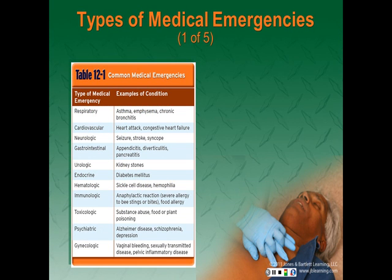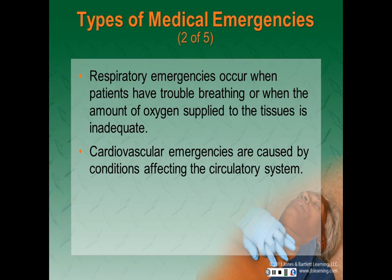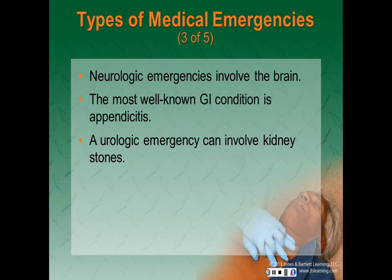Cardiovascular system emergencies are caused by conditions affecting the circulatory system. Some common examples include heart attacks and congestive heart failure. Neurologic emergencies involve the brain. These may be caused by a seizure, a stroke, or fainting or syncope.